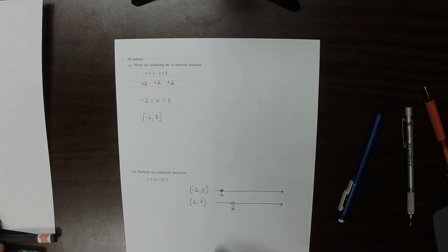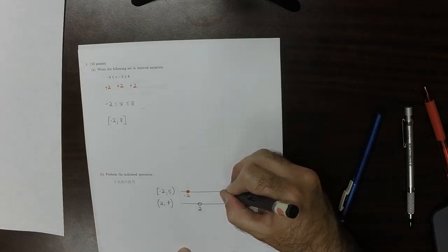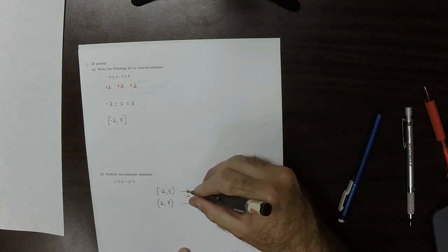Of the remaining endpoints, 5 and 7, 5 is furthest to the left, and it is open. So this is that interval.